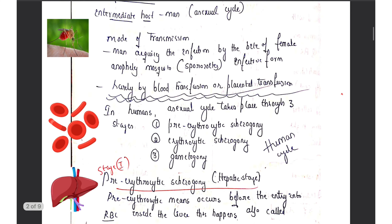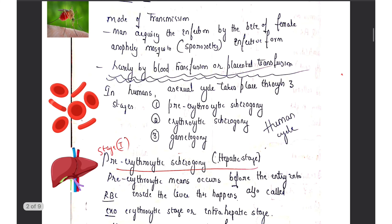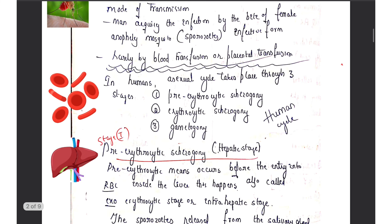The mode of transmission: man acquires the infection mainly by the bite of the female Anopheles mosquito, when the sporozoites present in the salivary gland of the mosquito are transmitted into the cutaneous venules, then they enter into the hepatocytes. Rarely, through blood transfusion or placental transmission, malaria can also occur in humans. In the human body, the plasmodium life cycle is asexual, which is why man is called the intermediate host.